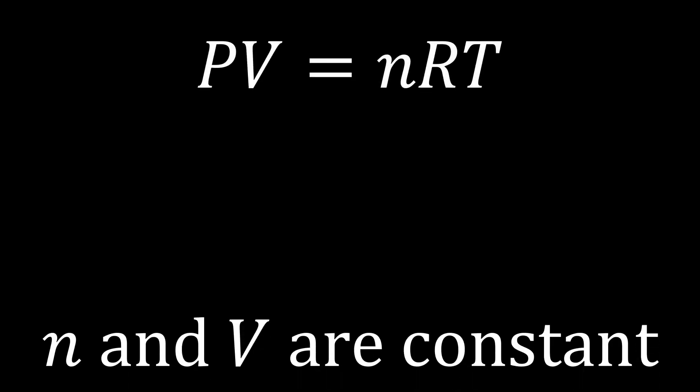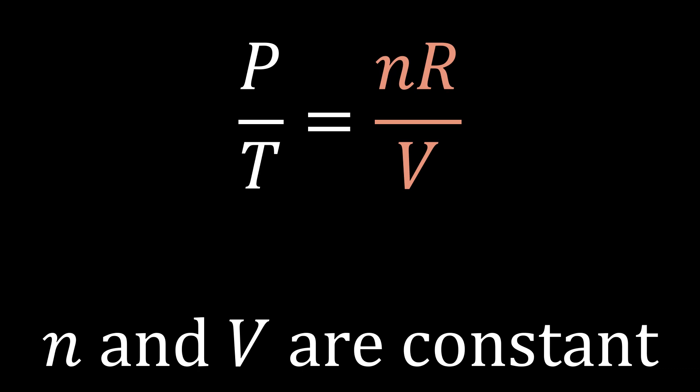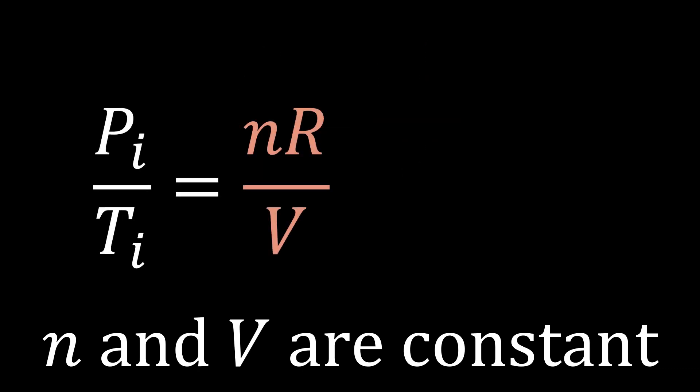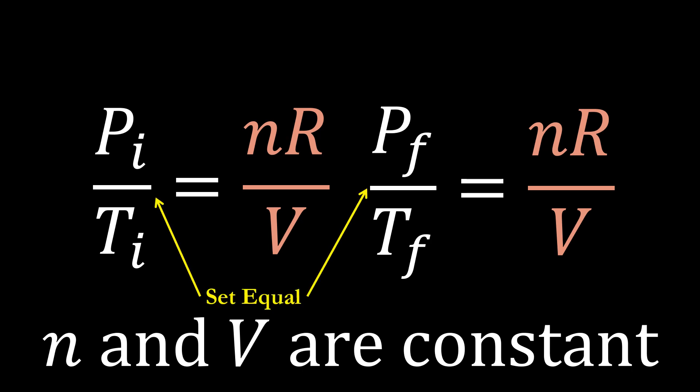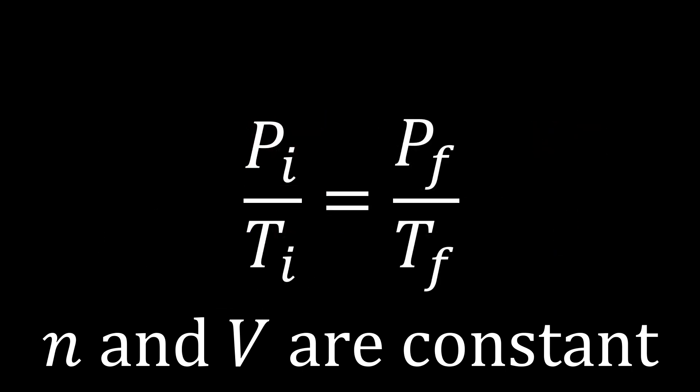We'll start with the ideal gas law again. We'll put it in the form where the variables that are held constant are on the right side, and the ones that can vary are on the left side. We'll write the equation for an initial state, and we'll use it again for the final state. And we'll notice that the right sides, again, are the same, so we can set these two equal to each other, and that results in Gay-Lussac's law.